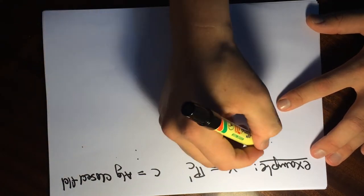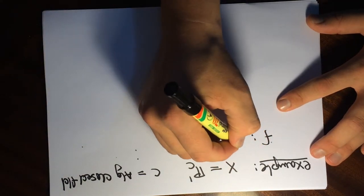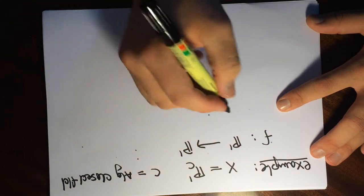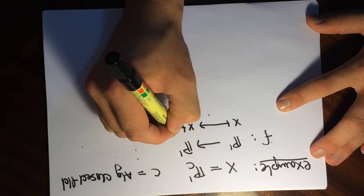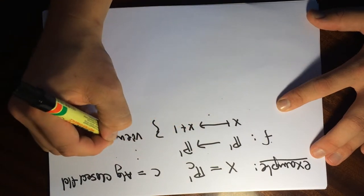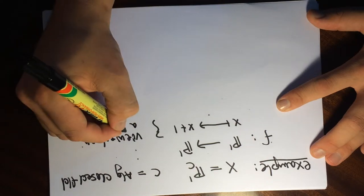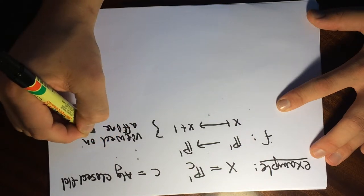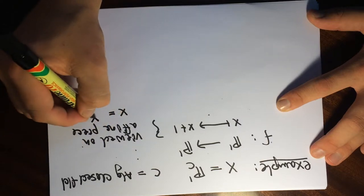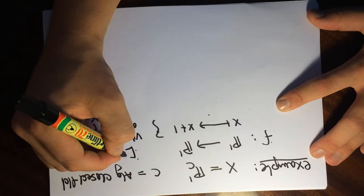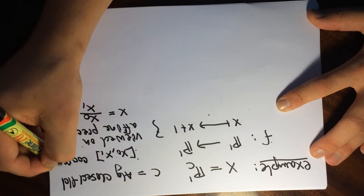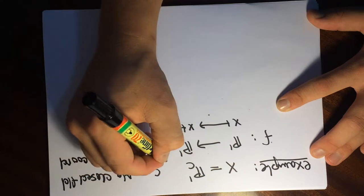We'll take F to be the map from P¹ to P¹, and it'll take X and map it to X plus 1. This is viewed on the affine piece, where X is equal to X₀ over X₁ — these are the projective coordinates for projective space.